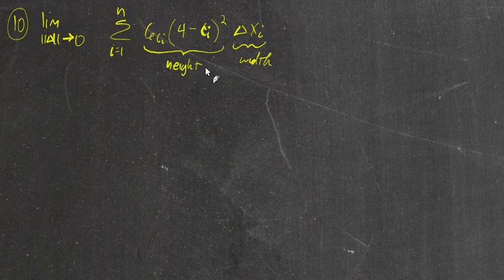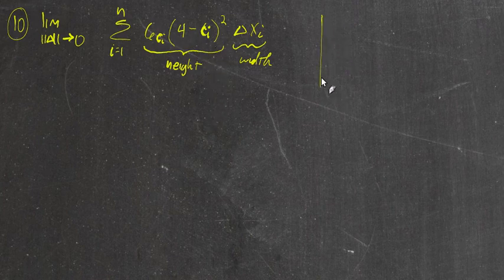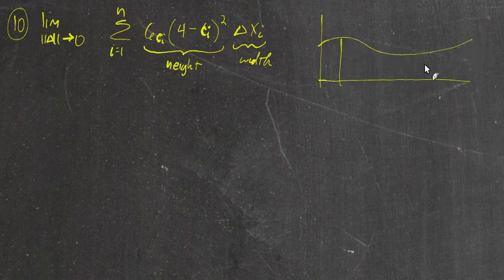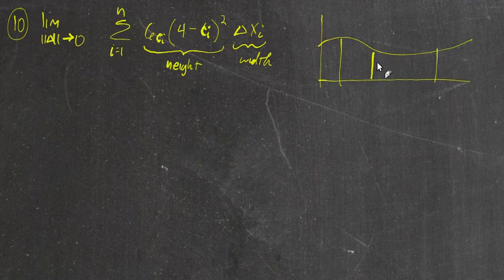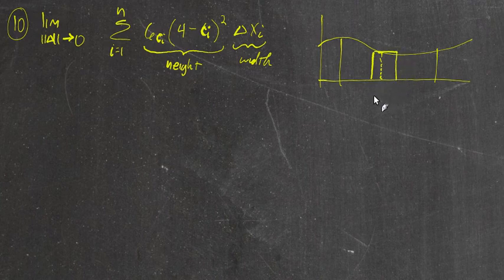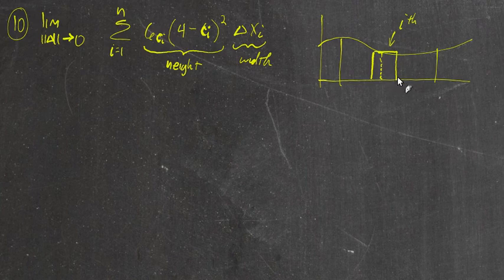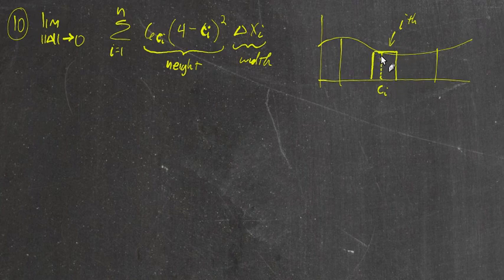For any rectangle — let's call it the i-th rectangle — we don't have to let the right side control the height of the rectangle. We can let any piece of the rectangle control the height, so we'll let c_i be anywhere inside this rectangle or anywhere on this sub-interval. We're going to let c_i be some arbitrary value — it could be the left, the right, or anywhere in between — and that defines the height of the function at that point.